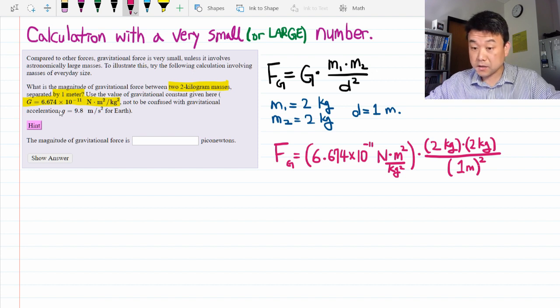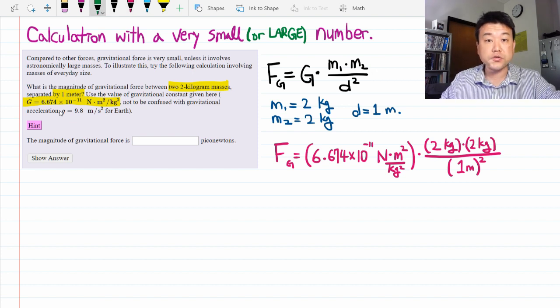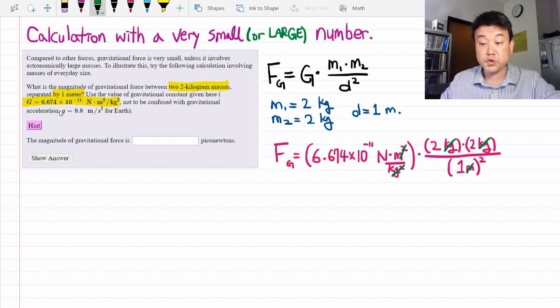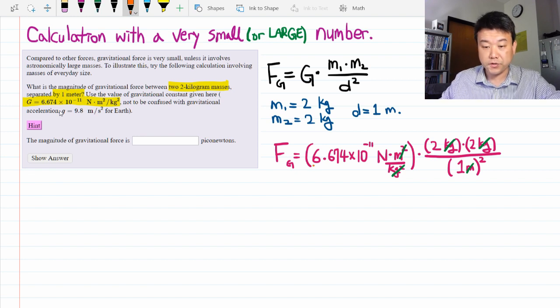Let me take some preliminary things out of the way. These units all work out. Kilogram squared gets cancelled by the kilograms. The meter squared gets cancelled by meter squared. So you are left with the Newton unit of force. Then the question is basically doing out this multiplication of these three numbers divided by one, which won't change anything.